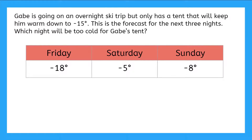So this problem is asking us about temperature. And as you might know, if you live somewhere cold, temperatures can be less than zero. Now looking at the temps, we need to determine which of these temperatures is colder than negative 15 degrees, since Gabe can't go on his trip on a night that's colder than negative 15. So we need to order all of our numbers: negative 18, negative 5, negative 8.